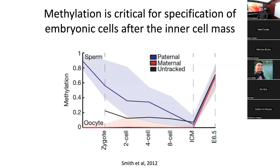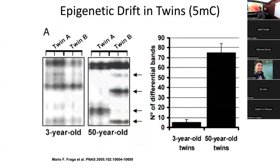Because of this resetting of marks, you might wonder if you could use that information. The first paper to show this was from Fraga, looking at identical twins — how do they change over time? Genetically they get slightly more different due to somatic mutations, but epigenetically they get much more different. Using a methylation banding pattern, you can see more differential methylated cytosines in 50-year-old twins compared to 3-year-old twins.